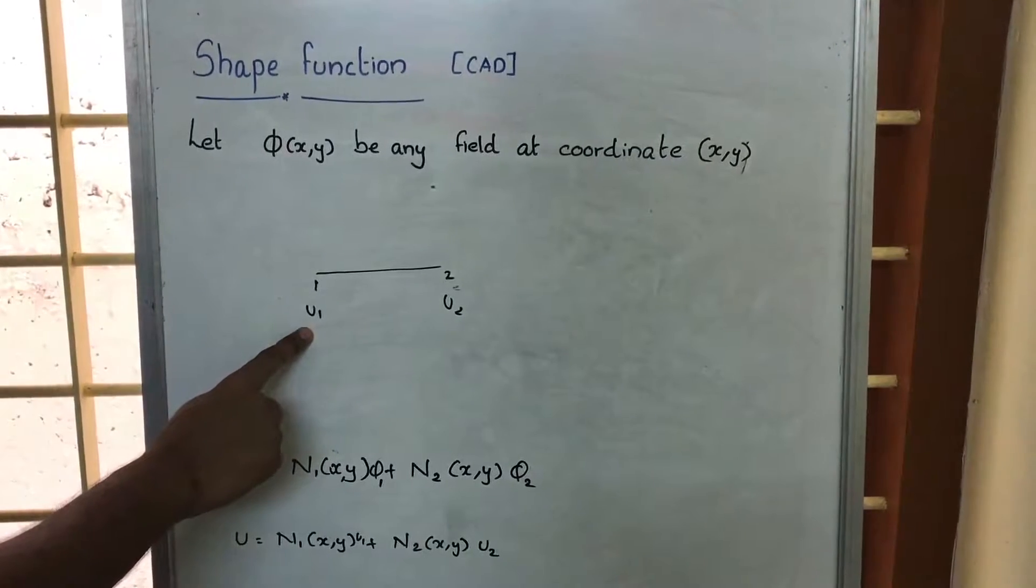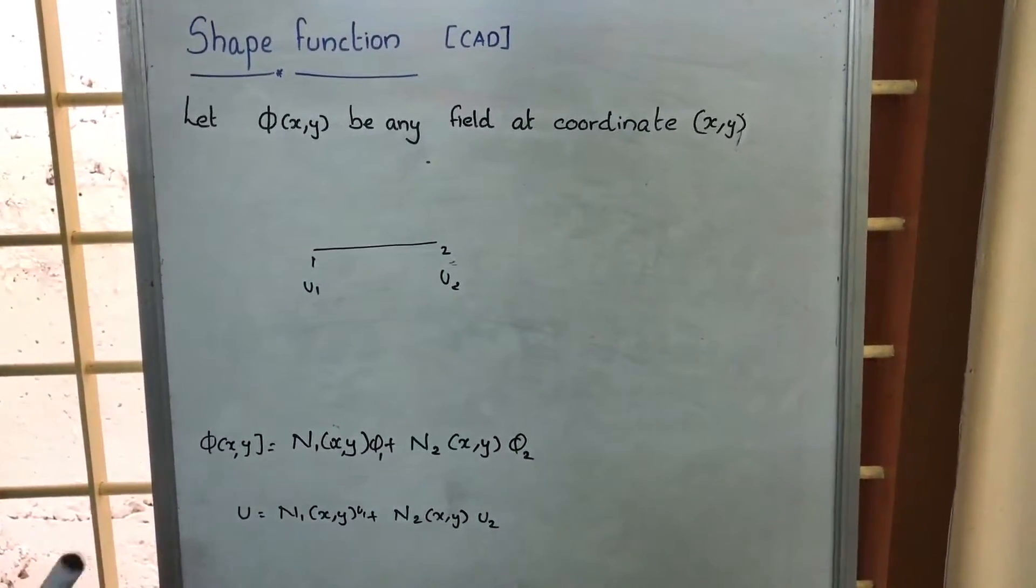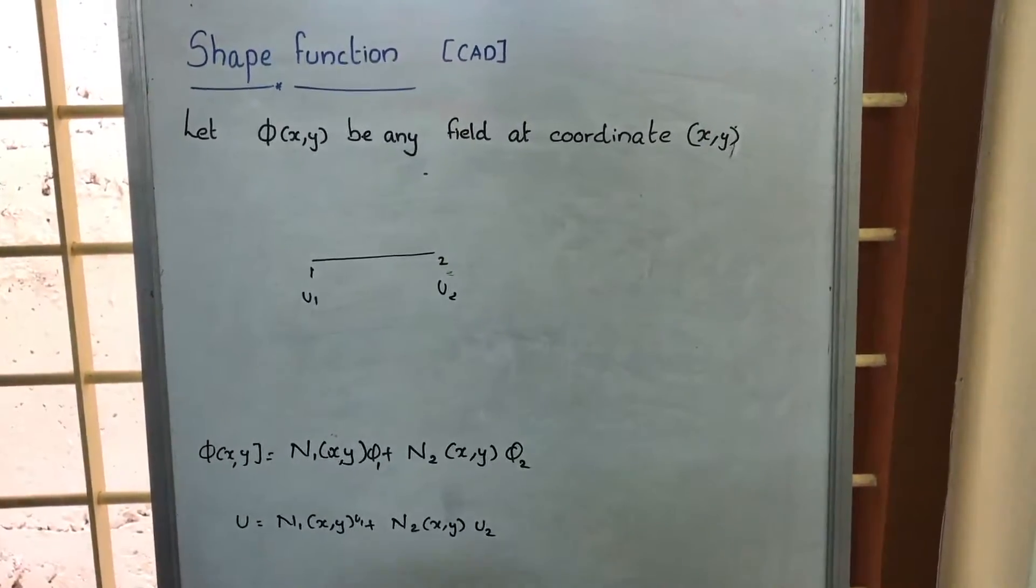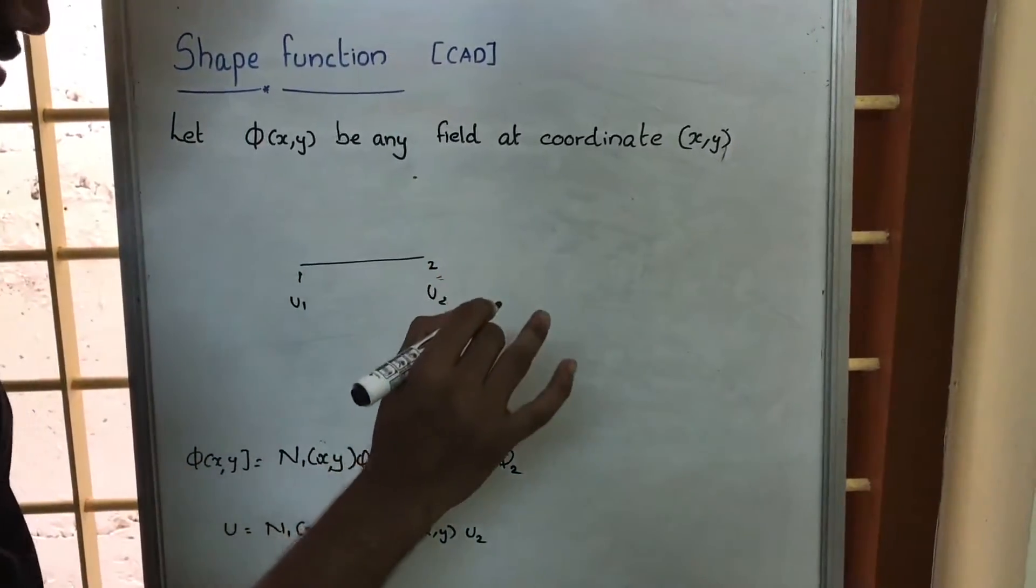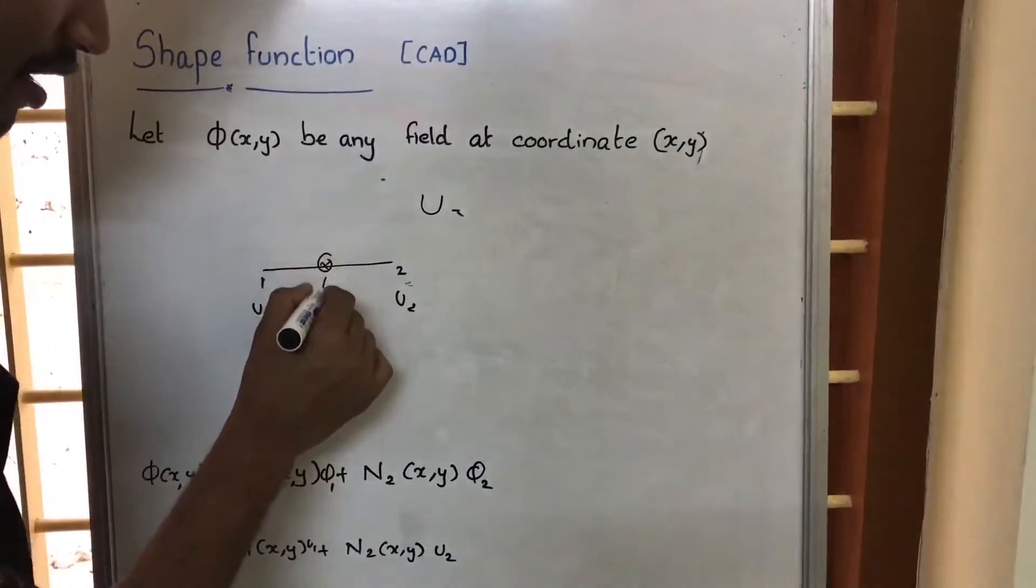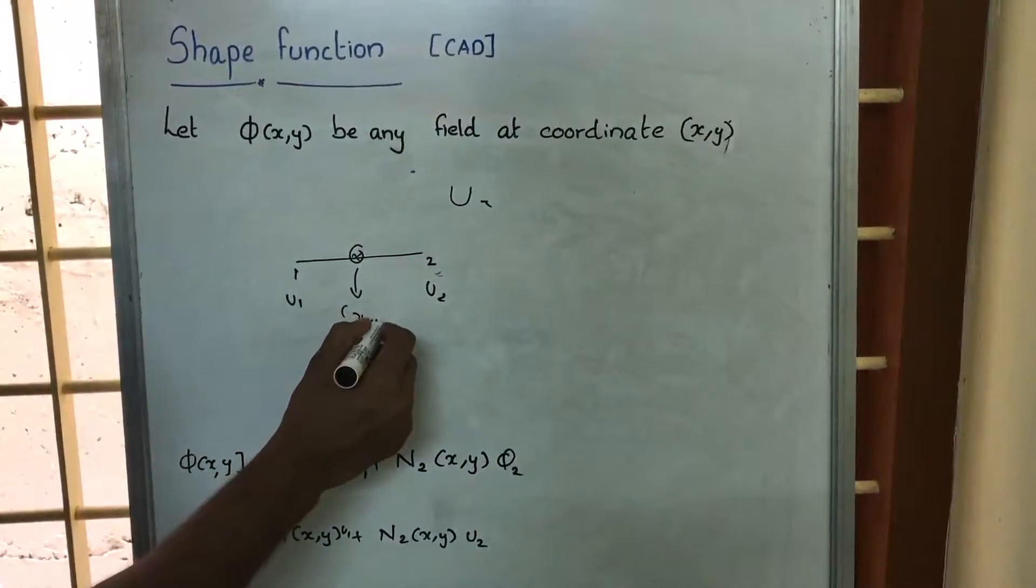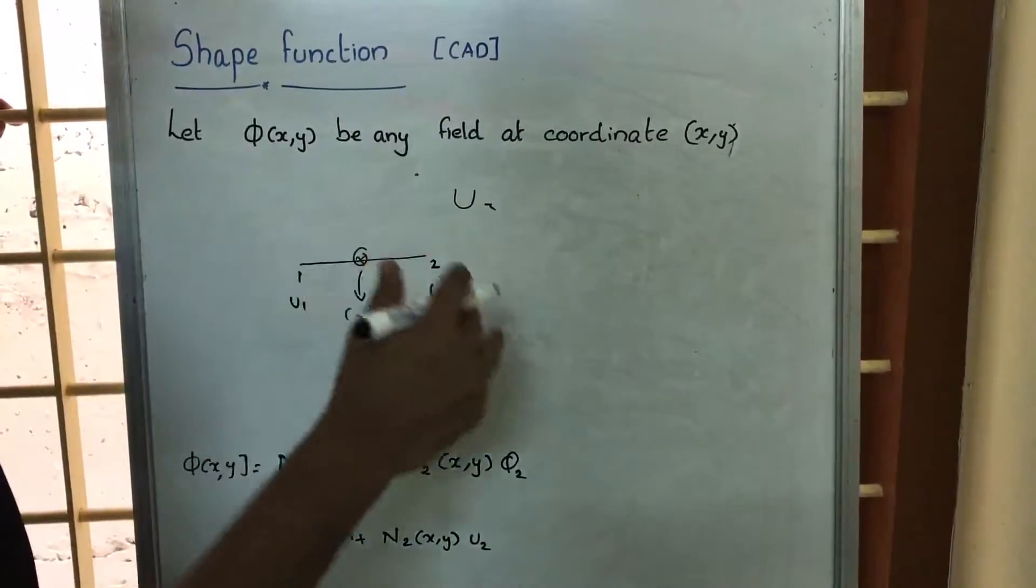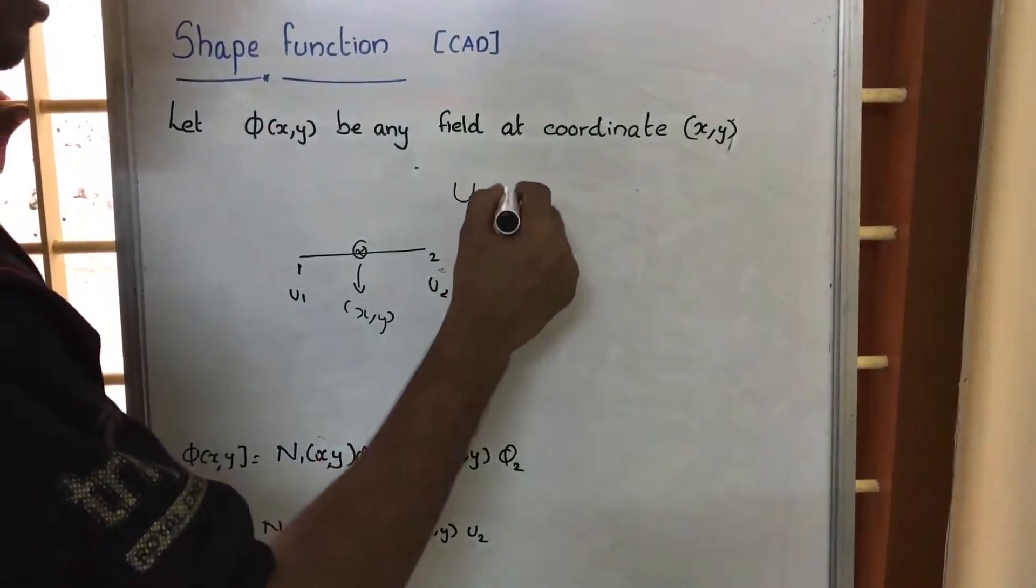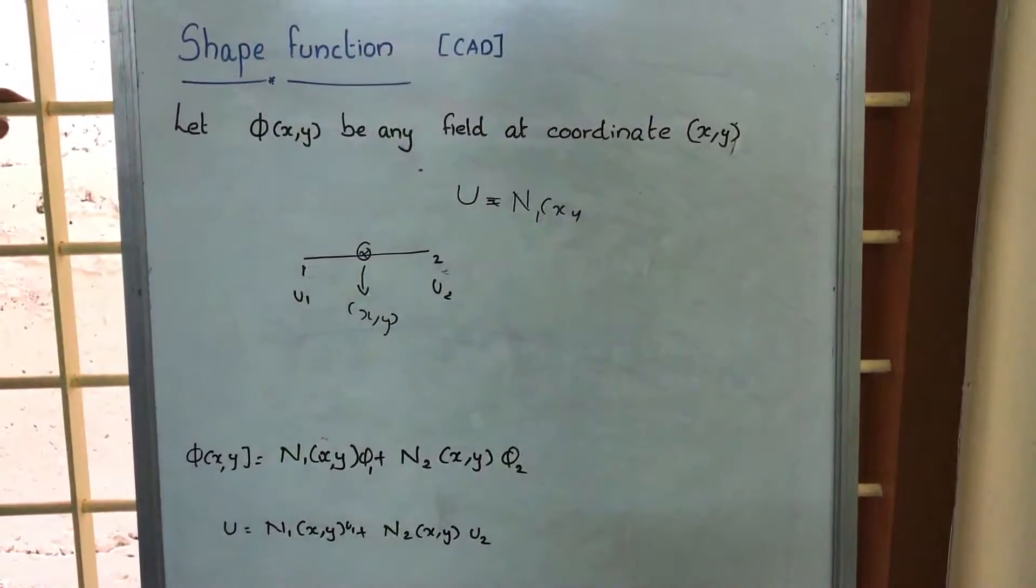This point 1 is having a displacement u1 and node 2 is having a displacement u2. And by some mathematical formulation we will be getting this u in between the place here. If we have to find the displacement at a point at this place, at a coordinate x, y, by some mathematical formulation we will be getting the function like N(x,y). We will be getting this function.